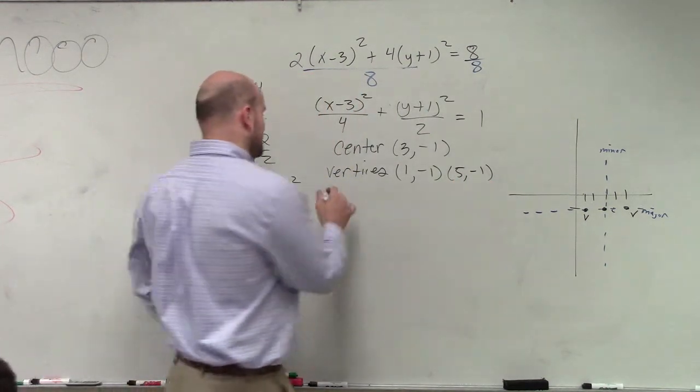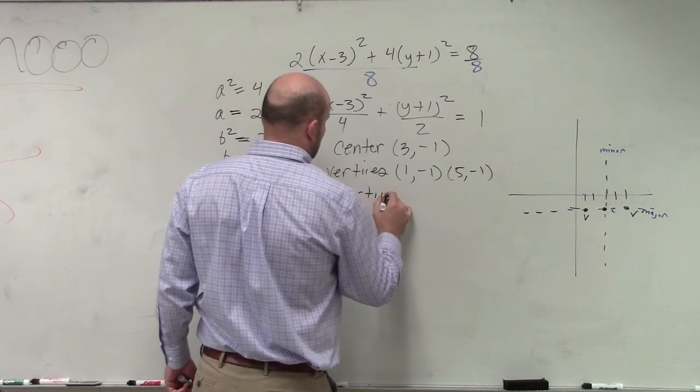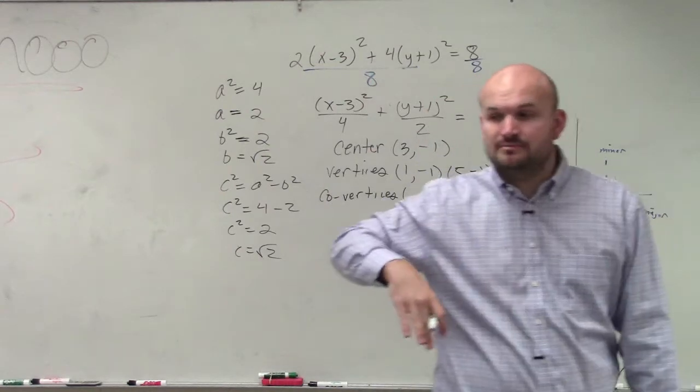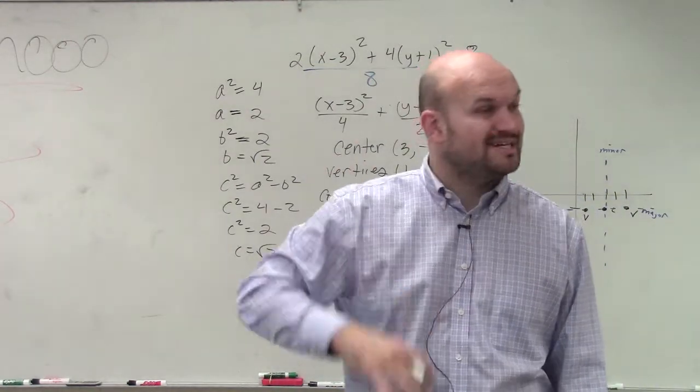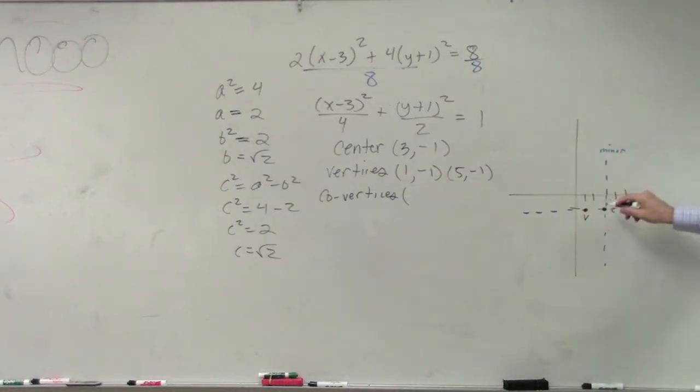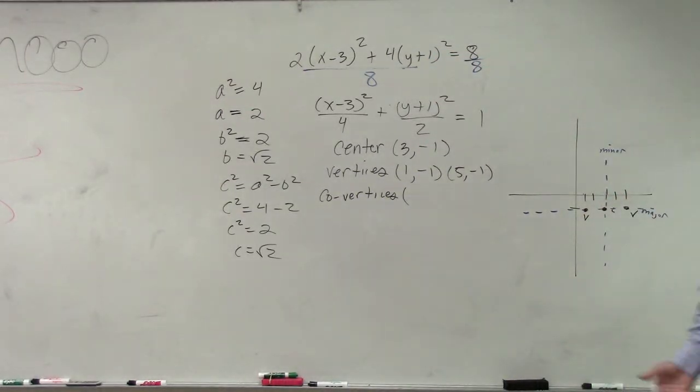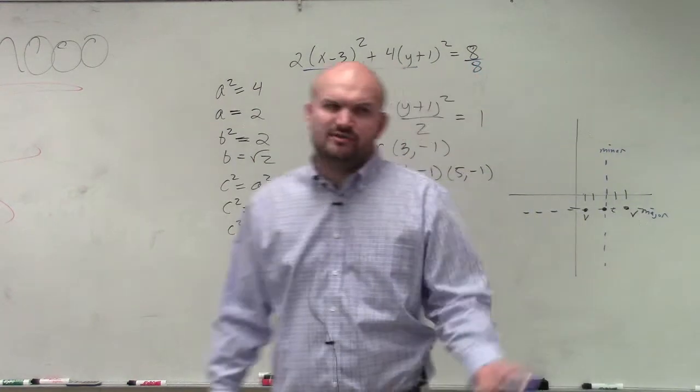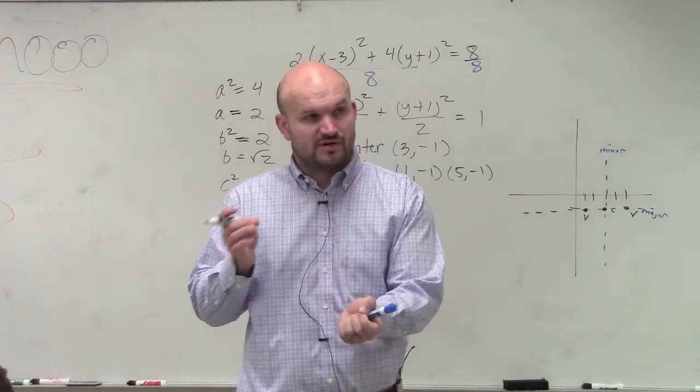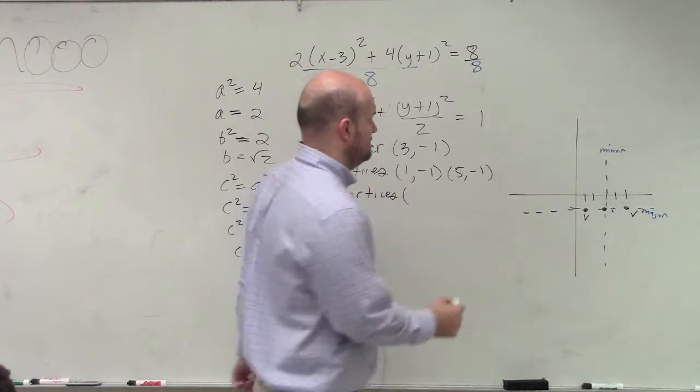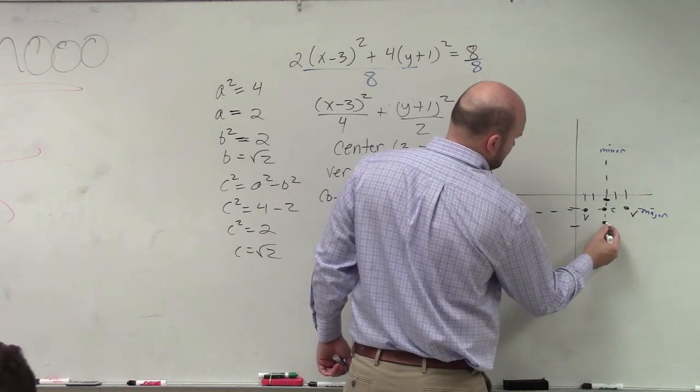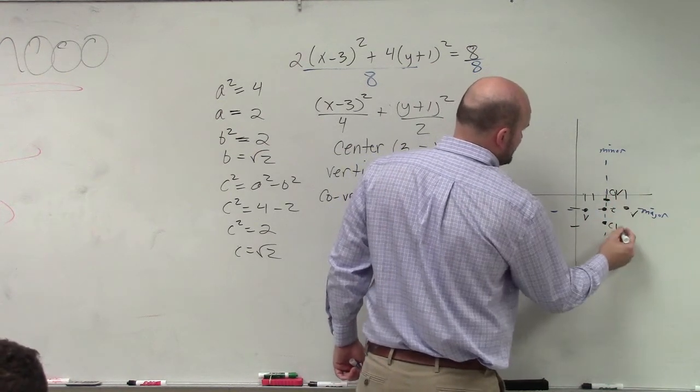The next thing is finding the co-vertices. Co-vertices, remember, are going up or down, right? They're going up or down from the minor axis. Now, they're going up or down a value of the square root of 2. Well, what is the square root of 2? Well, the square root of 1 is 1. The square root of 4 is 2. So therefore, my co-vertices have to be between 1 and 2. So co-vertice, co-vertice.